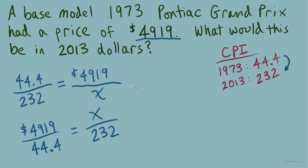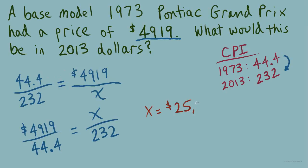All proportion arrangements involve the same operations: multiply 232 times $4,919 and divide by 44.4. This gives approximately $25,703. So that new car costing less than $5,000 really wasn't that cheap after all — taking inflation into account, it would be like a brand new $25,700 car today, which is pretty common with what we have now.